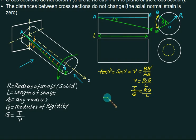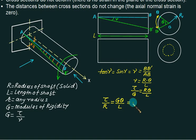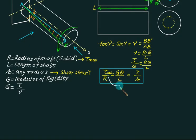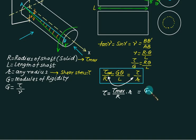Replacing gamma with tau divided by G, we get: tau divided by G equals R times theta divided by L. This gives us tau divided by capital R equals G times theta divided by L. Generalizing for any radius r, we write tau divided by small r equals G times theta divided by L. At outer radius R the shear stress equals tau max. So this is the first torsion equation developed. Comparing the first and last terms: tau equals tau max divided by R multiplied by r, and also equals G times theta divided by L times r.